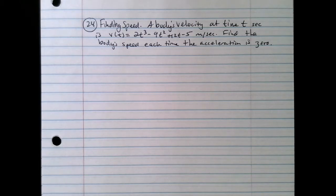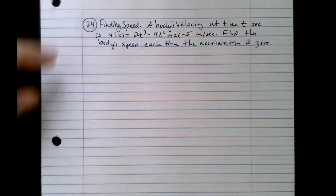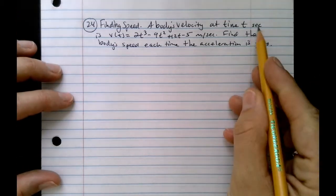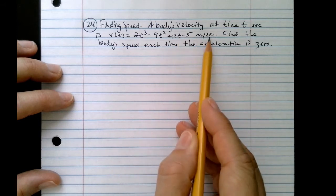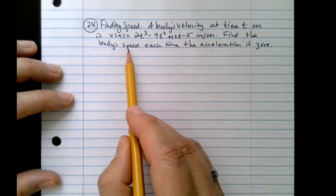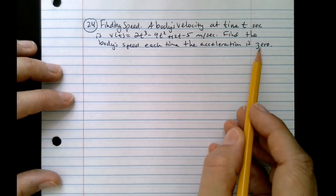In this particular case, we do have a function, but notice there's only one question. So we have to use some of the different ideas together and think about those in order to answer this question. Here we go. A body's velocity at time t seconds is given as v of t equals blah, blah, blah, blah, blah meters per second. Find the body's speed each time the acceleration is zero.